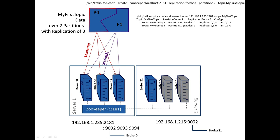For each partition: partition 0 has leader 0, indicated in red, and we've got replicas 0, 2, and 3 — so that's brokers 0, 2, and 3. For the second partition the leader is 2, following the purple line, and 2, 3, and 0 are members in terms of the replicas. We can see that they're all in sync with one another — the in-sync replicas for each of those partitions means all three elements are in sync.